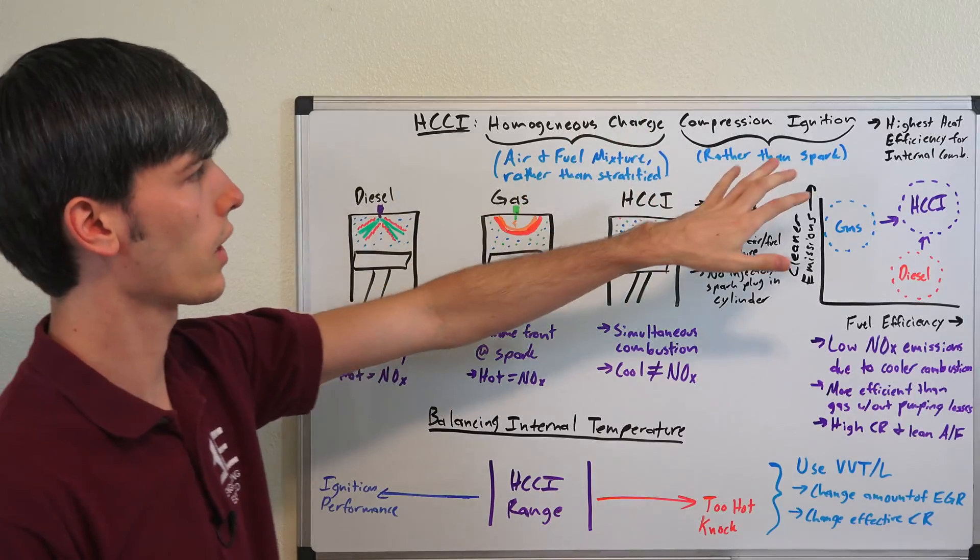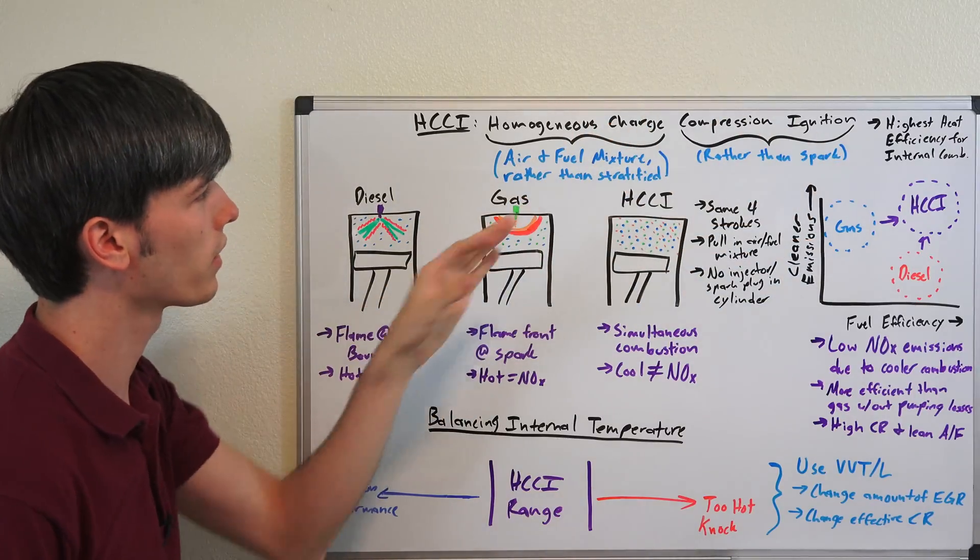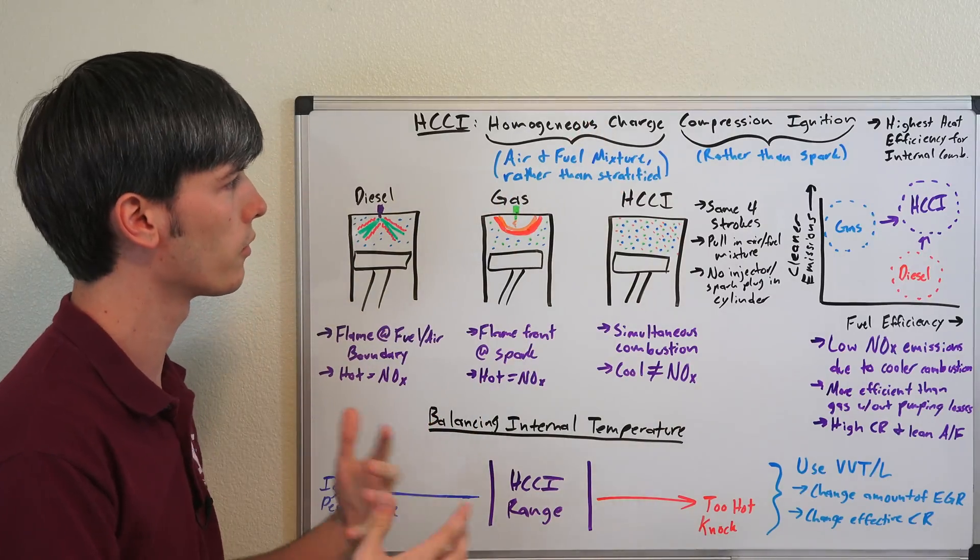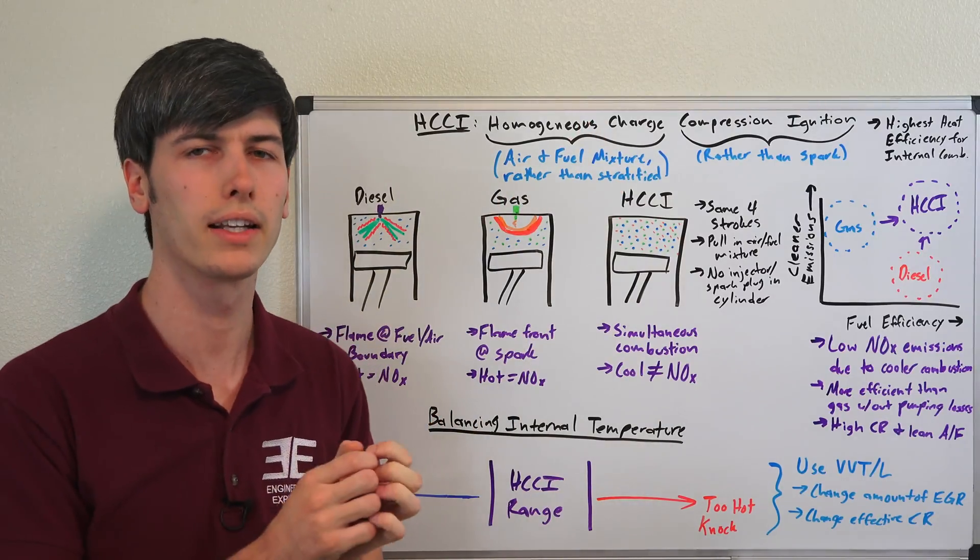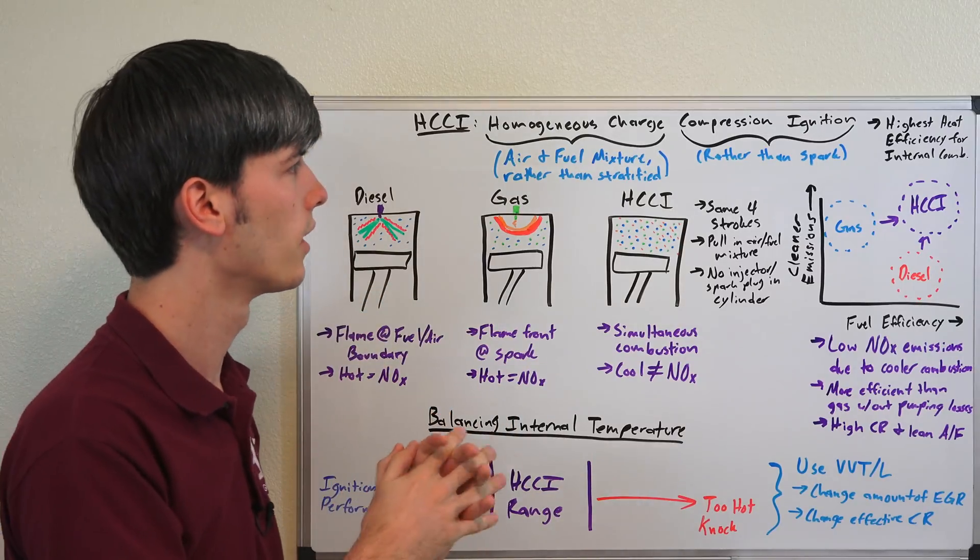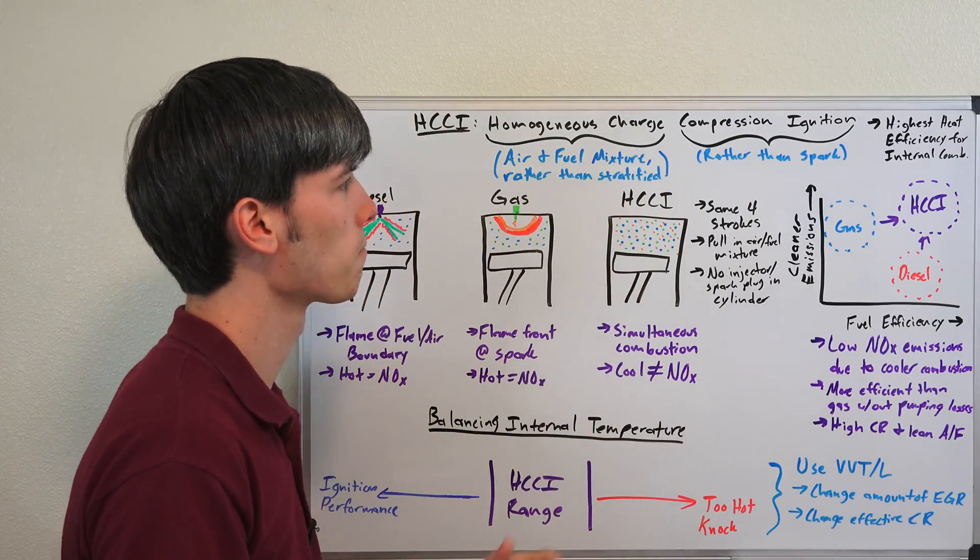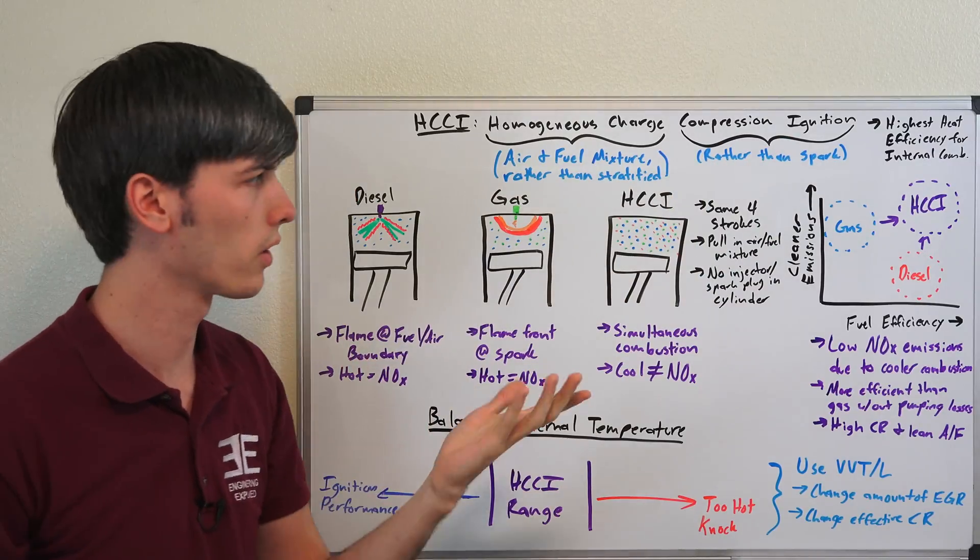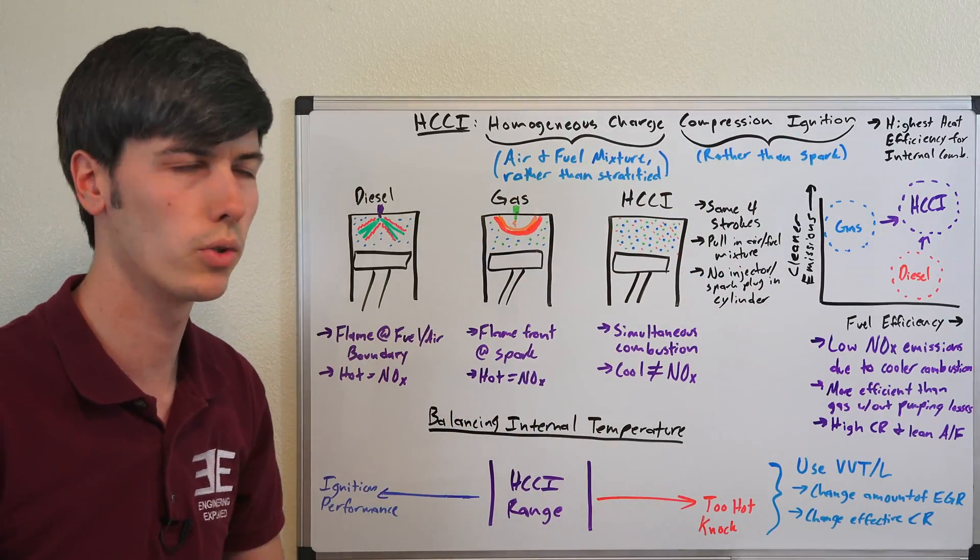A homogeneous charge compression ignition. So breaking down what this means, homogeneous charge means you have a good mixture of air and fuel rather than stratified like in a diesel engine where you compress that air and then you inject fuel into it and that fuel then ignites. And then compression ignition, using compression to ignite the air fuel mixture rather than a spark, spark ignition like you have with traditional gasoline engines.